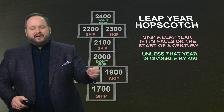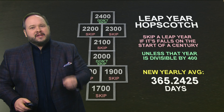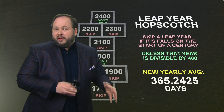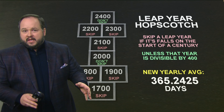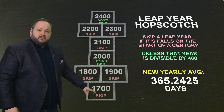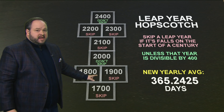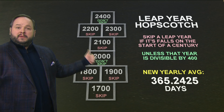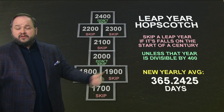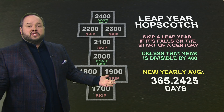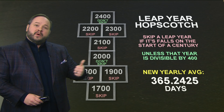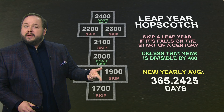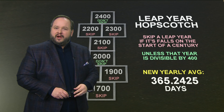You skip a leap year if it falls on the century mark, unless that century is divisible by 400 evenly. So 1700, 1800, 1900 are not divisible by 400, but 2000 is. In 2000 we didn't skip the leap day, but we're going to skip it in 2100, 2200, and 2300 — but not in 2400.